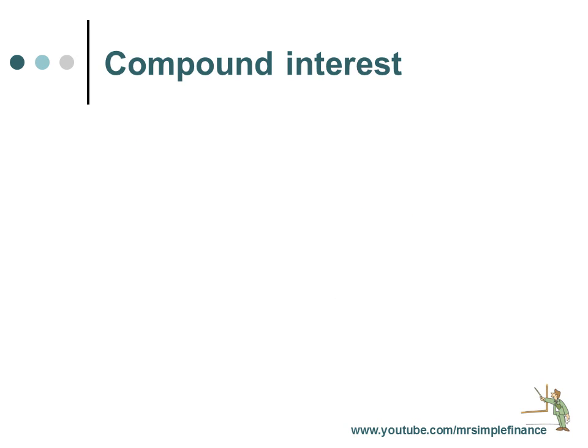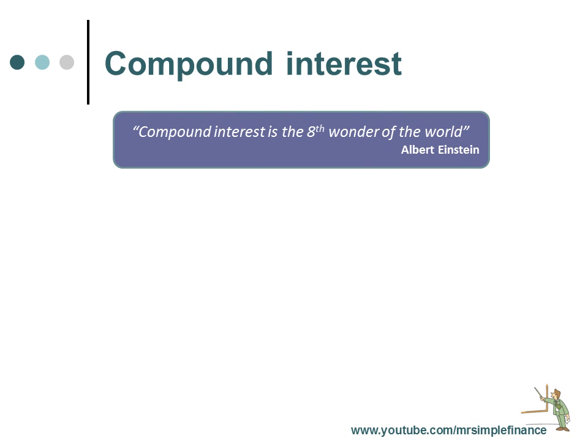Compound interest occurs when interest is added to the principal and then reinvested. This in turn results in the interest earning interest in addition to the principal. The nature of compounding interest is that the capital sum accelerates quickly, having the additional sums added to the original amount. If you are an investor, it can work to your advantage. Albert Einstein has referred to compound interest as the eighth wonder of the world.